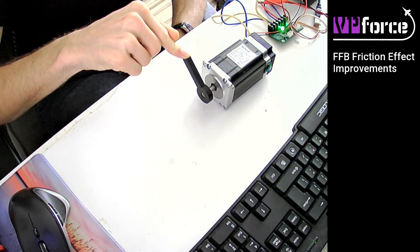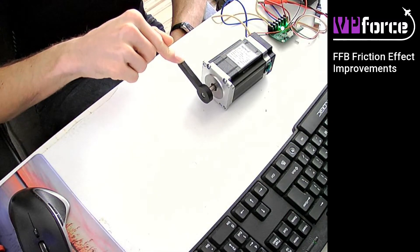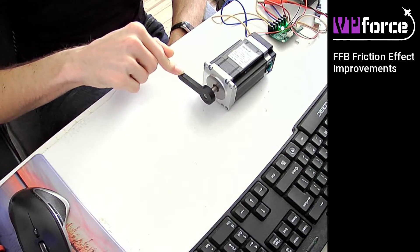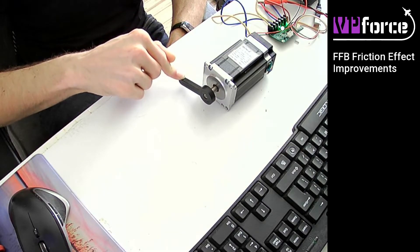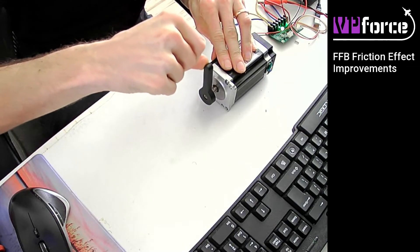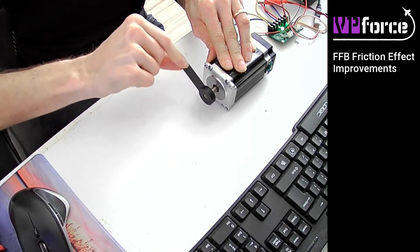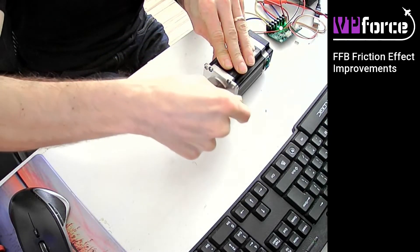But if I overcome the configured static friction, then I can turn the shaft. But it takes some pressure to do so. It needs quite some force to move.